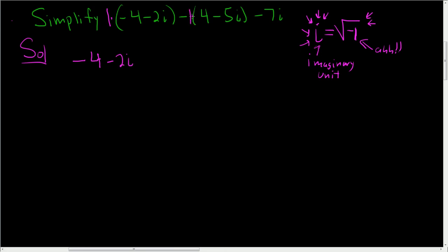Now here there's really a minus 1. And so what we have to do is distribute the minus 1. So minus 1 times 4 is minus 4, and minus 1 times minus 5i is plus 5i. And then this minus 7i just hangs out.